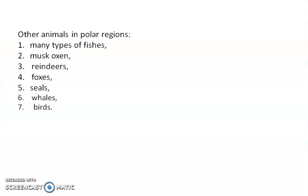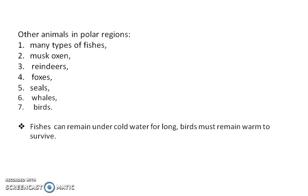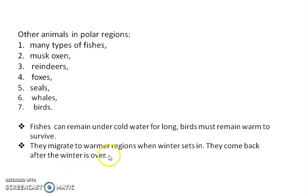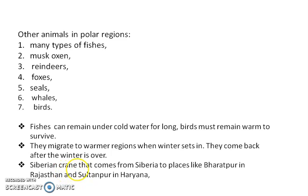Other animals present in the polar regions include various types of fish, musk oxen, reindeers, foxes, seals, whales, and birds. Fish can remain in the cold water for a long time, but birds living in the polar region cannot survive in very cold climates. So they move to warmer countries to survive — this is called migration. They migrate to warmer regions when winter sets in; for example, birds from Siberia and Ukraine come to India, to places like Bharatpur in Rajasthan or Sultanpur in Haryana. There they lay eggs, and once the young ones are big enough, they take them back to their native region.